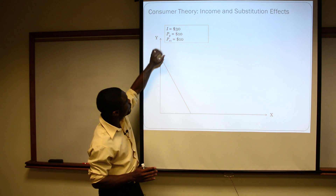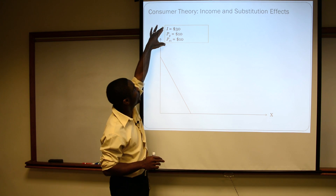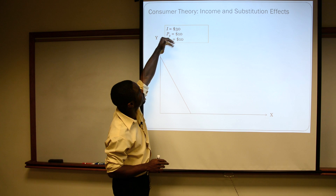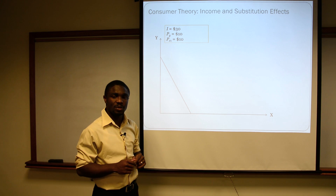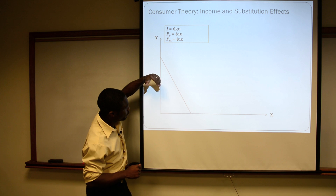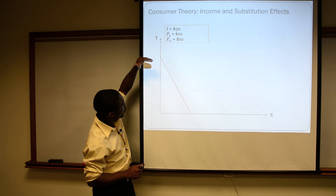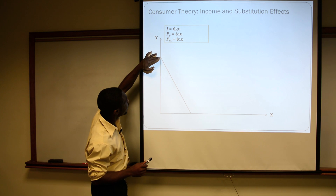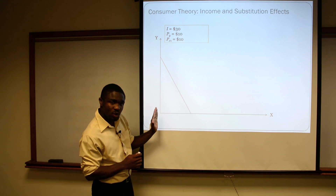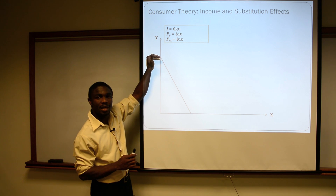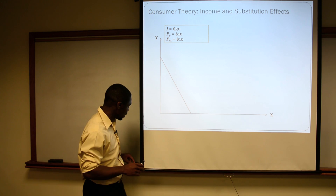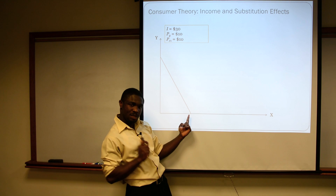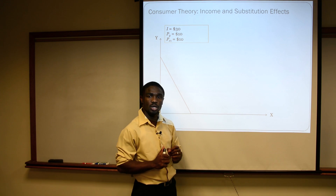We could do this more generally, but in this case, just to make things a little bit easier, we're going to think about specific income levels, price levels, 10 and 10 for good Y and good X, respectively. In order for us to construct our budget line, all we need is our Y-intercept and our X-intercept. Our Y-intercept simply says, if I buy zero units of good X, how many units of good Y can I buy? That just means I'm spending the entirety of my income on good Y, and likewise, our X-intercept simply says I'm spending the entirety of my income on good X.